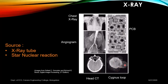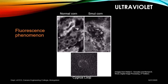Another electromagnetic spectrum used for photography is ultraviolet radiation, which makes use of the fluorescence phenomenon. Under UV light we can see microorganisms or objects that exhibit fluorescence. For example, normal corn versus corn affected by a virus can be clearly distinguished using UV radiation. It can also capture outer space objects and is used in fake currency detection, where high-value notes have embedded material that glows under ultraviolet rays.